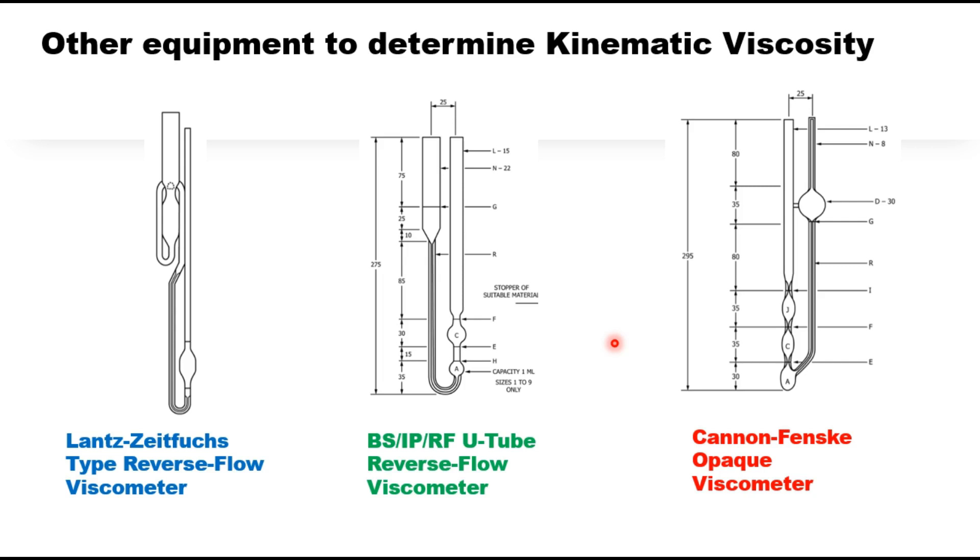The viscosity is used to determine the compaction temperature of HMA and also the mixing temperature of the mix. If you plot viscosity and temperature correlation, viscosity taken on y-axis in log scale and temperature on x-axis, then the change in viscosity with temperature will be like this. A selected temperature corresponding to a viscosity of 0.28 Pascal second for the compaction temperature and mixing temperature will be corresponding to a viscosity of 0.17 plus minus 0.02 Pascal second.